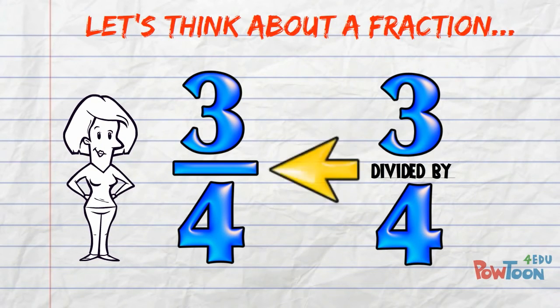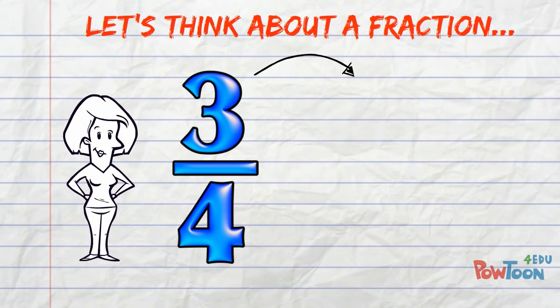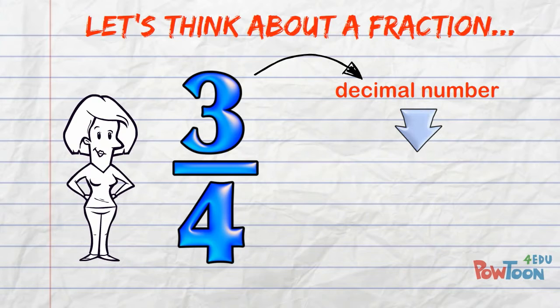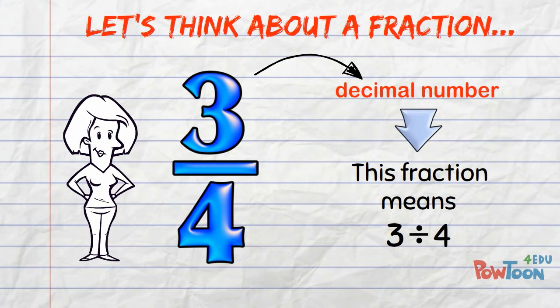This line separating the numerator and the denominator means divided by. Transforming 3 quarters into a decimal number is easy when you say to yourself, this fraction means 3 divided by 4.